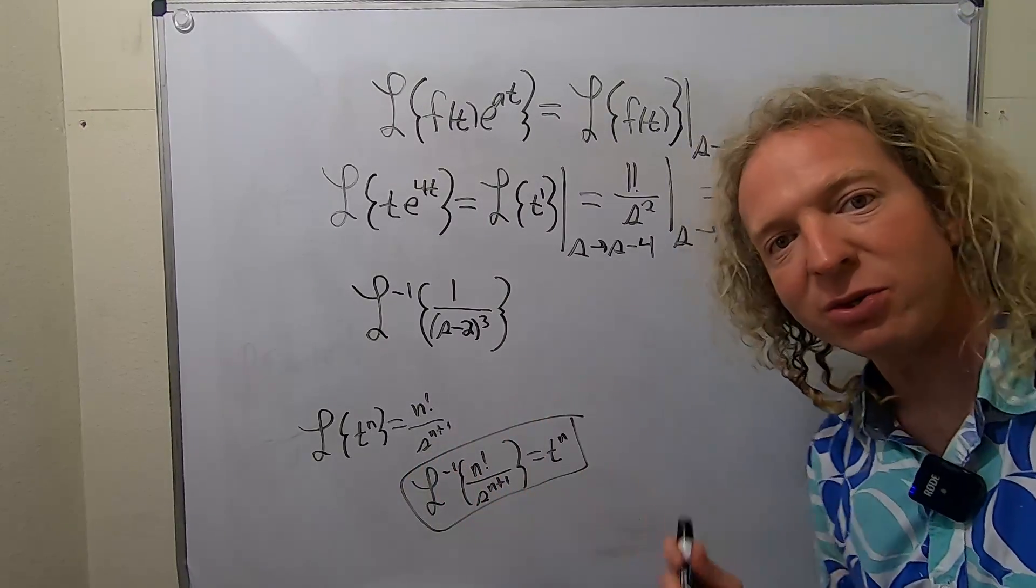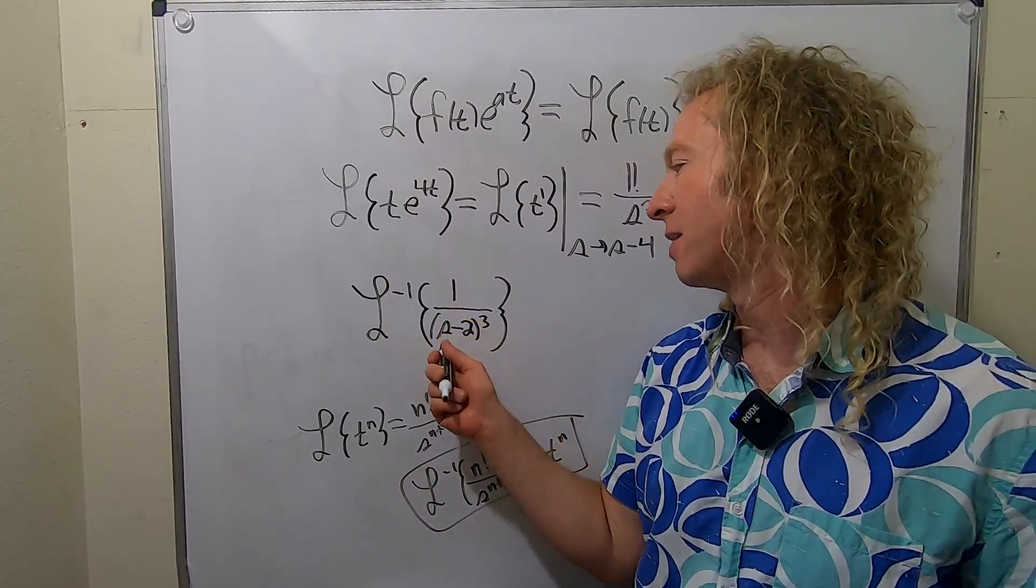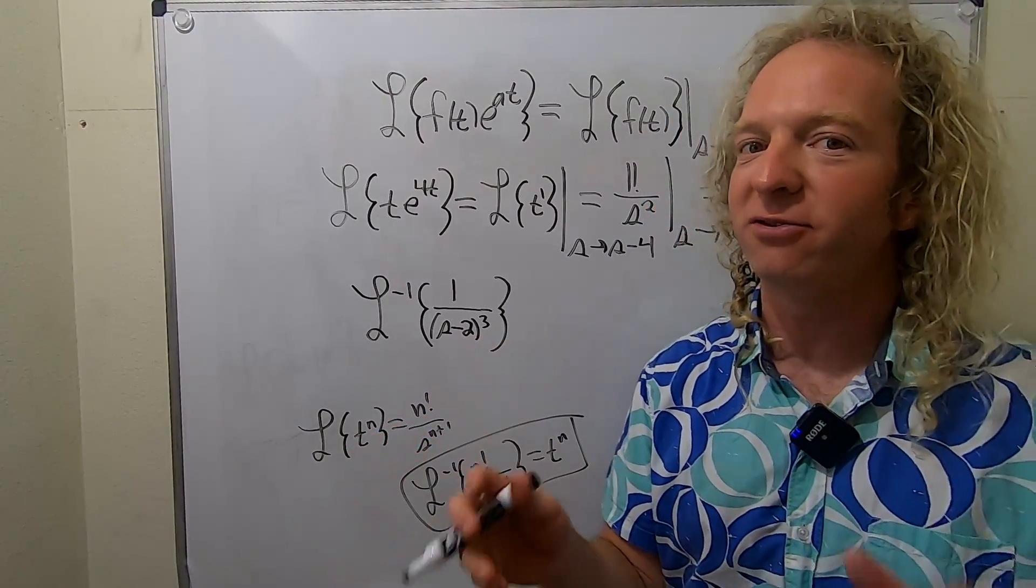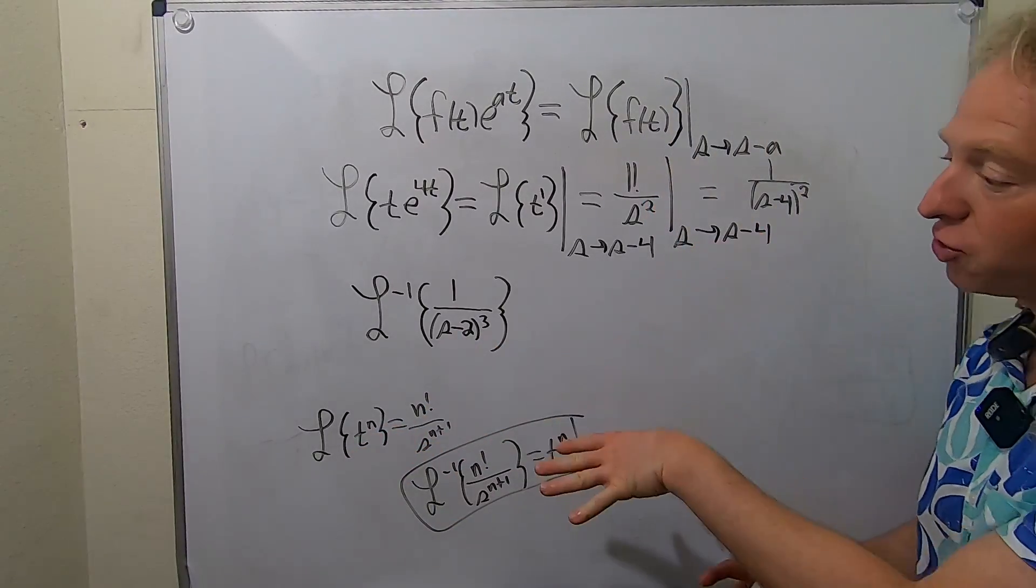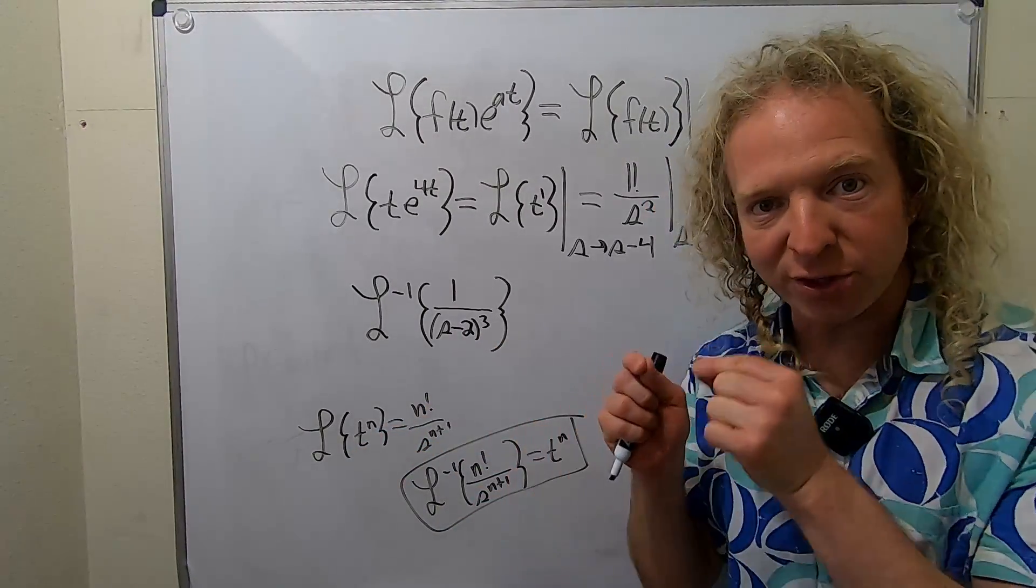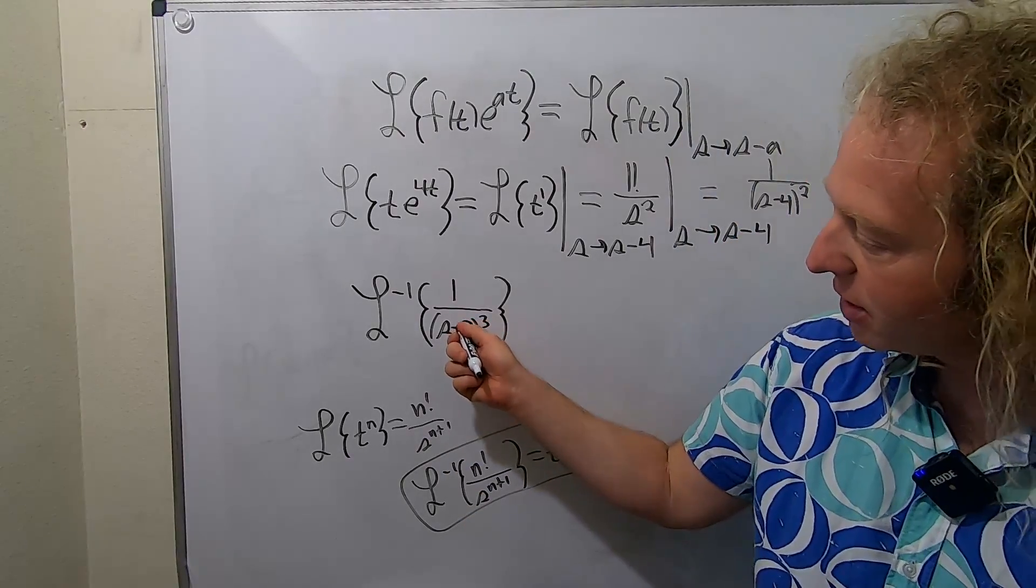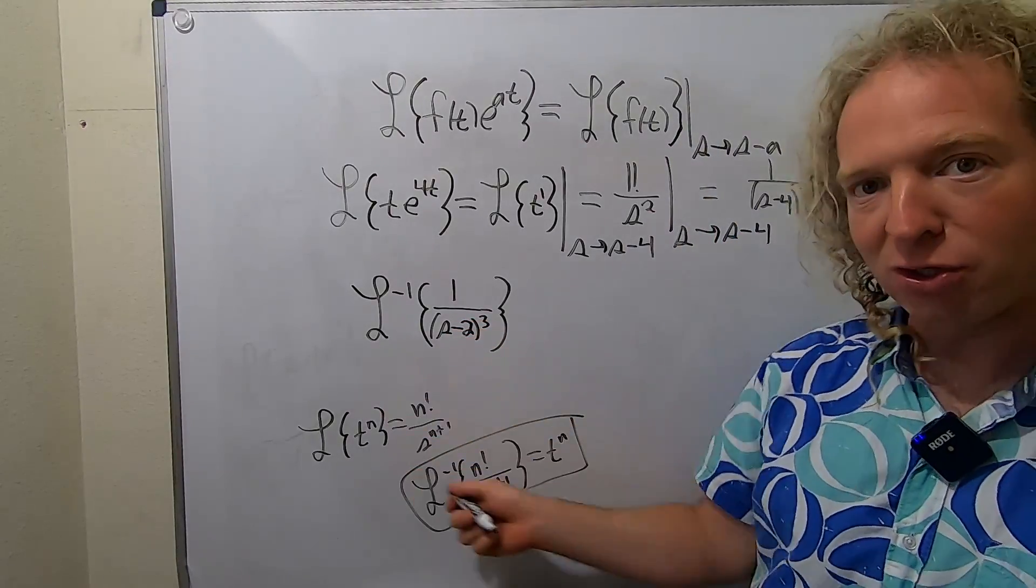So this is the formula we want to use in this problem. However, we cannot use this formula yet because we have an s minus 2. That's why we have the first translation theorem. So the first translation theorem will allow us to do a shift. So we need to get rid of this s minus 2 and make it an s so we can use this formula.